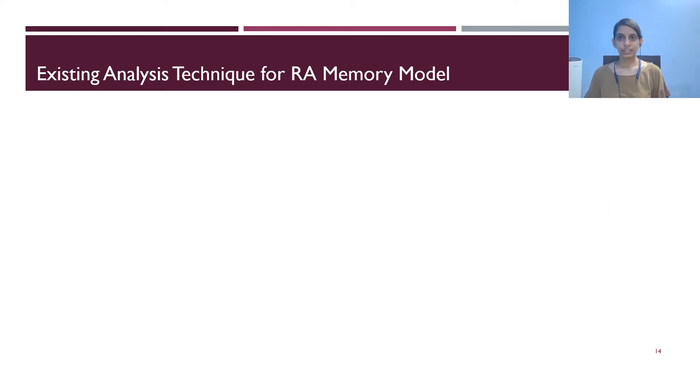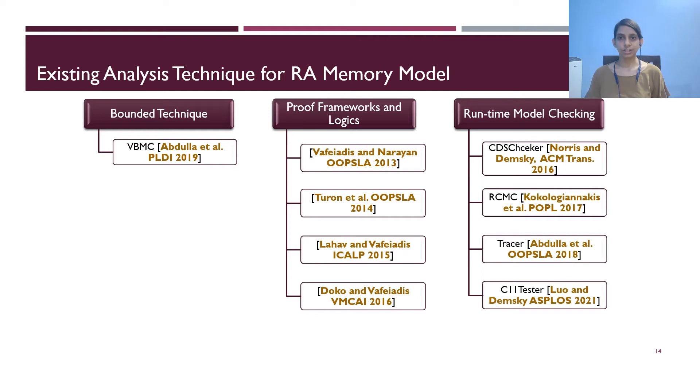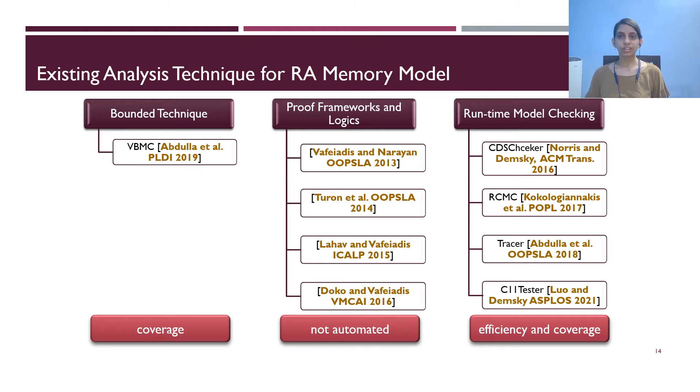The existing work for analyzing programs under RA memory model can be divided into three categories. There are some bounded techniques such as VBMC. There are several proof and logic based techniques and some runtime model checkers. Each of these techniques has their own limitations. Bounded techniques cannot cover the entire state space and hence are insufficient to verify the correctness of a program. Proof and logic based frameworks are hard to use as a push button technique. Runtime model checkers are precise but slow. These model checkers can analyze the program for only one possible input. Clearly, there is a scope for an automated and efficient technique that can provide the proof of correctness.